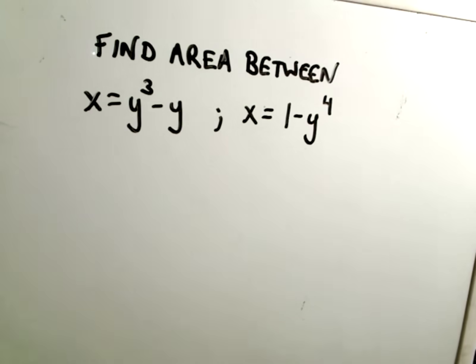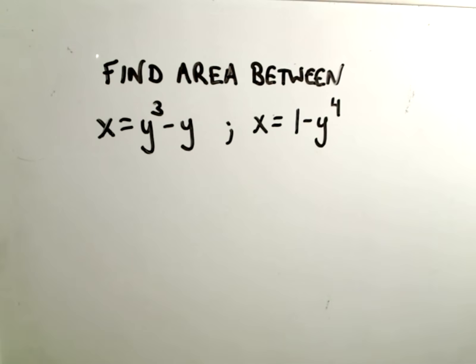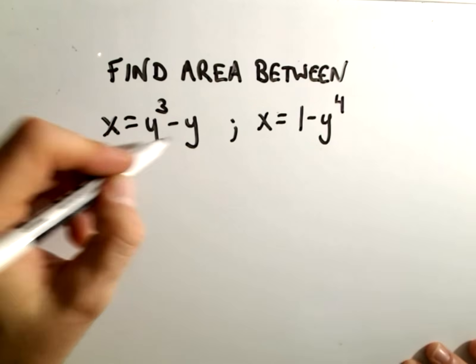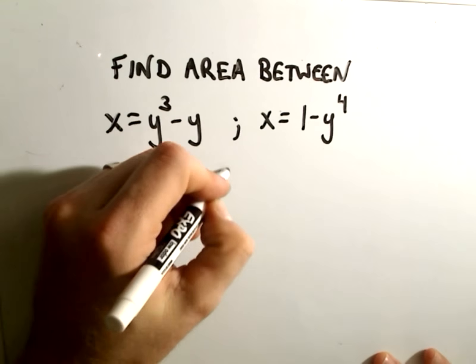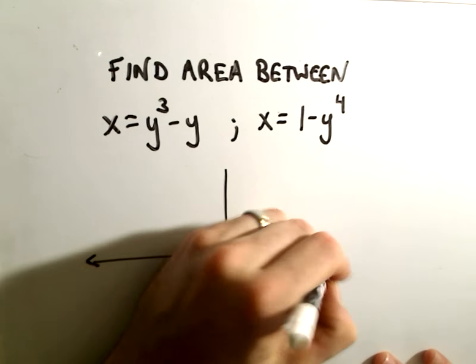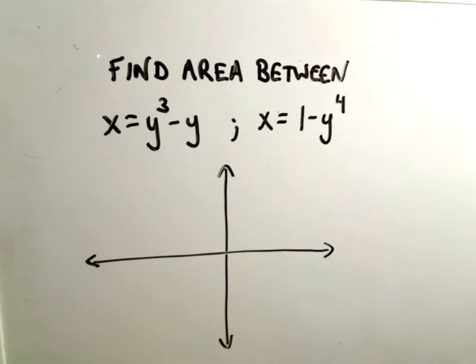So in this video I think I'm going to set this one up and graph it, because I think that will be kind of a tricky part, and then integrate it in another part. So we're going to find the area trapped between the curves x equals y to the third minus y, and x equals one minus y to the fourth. Here's going to be my cruddy little graph.